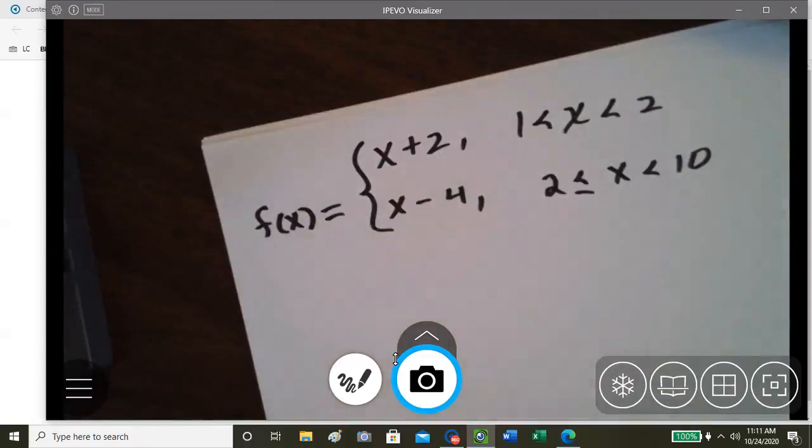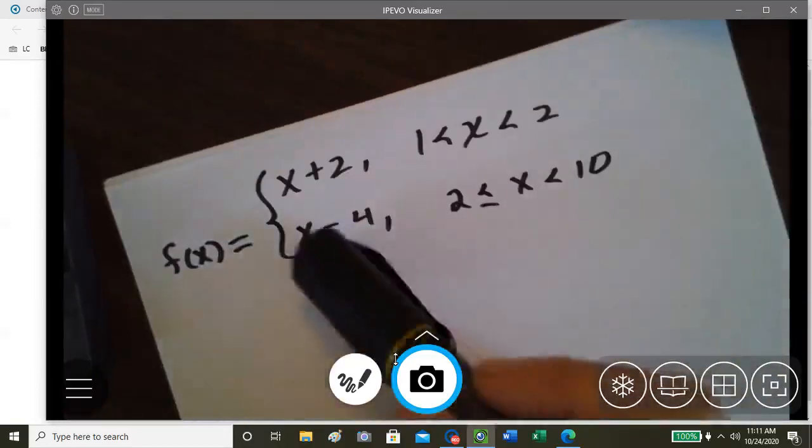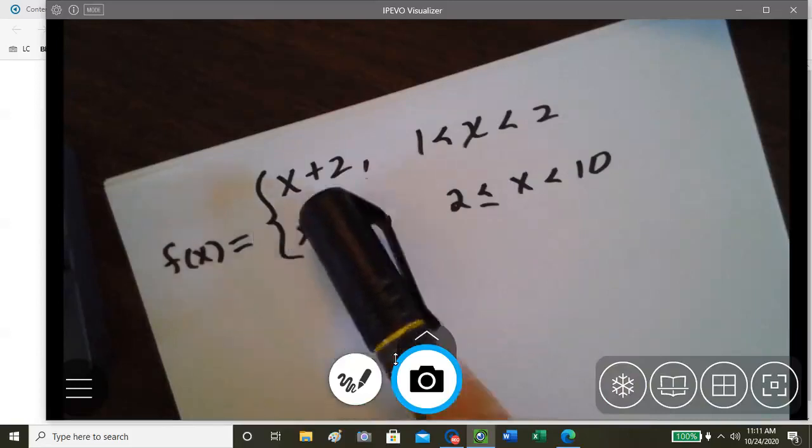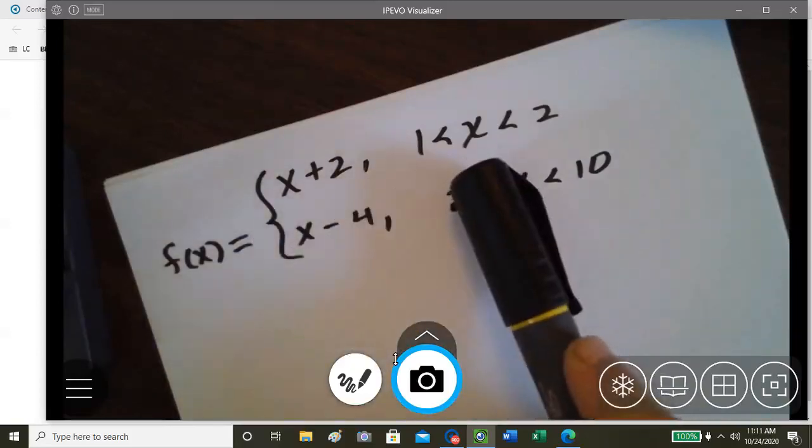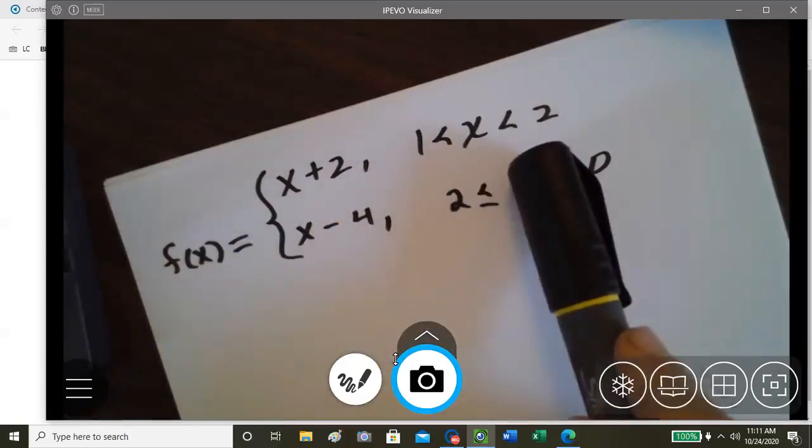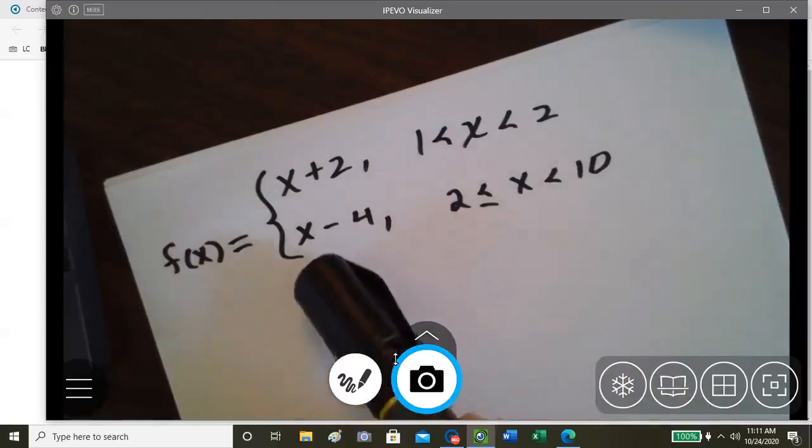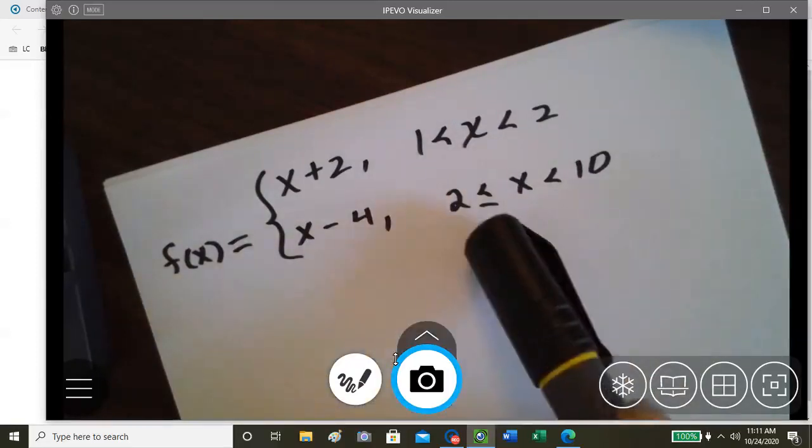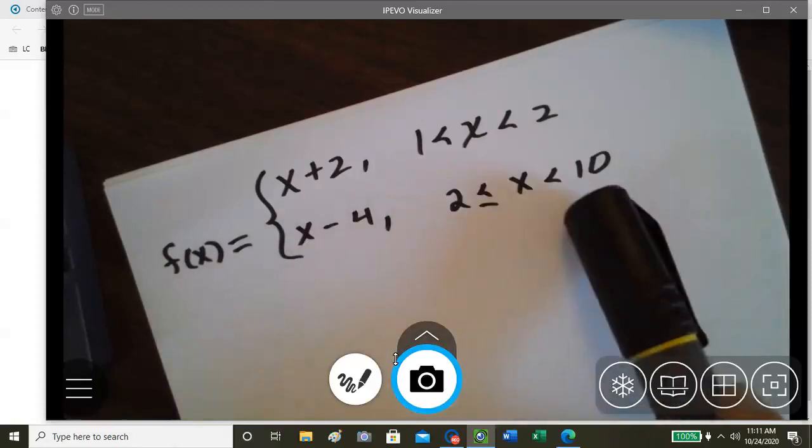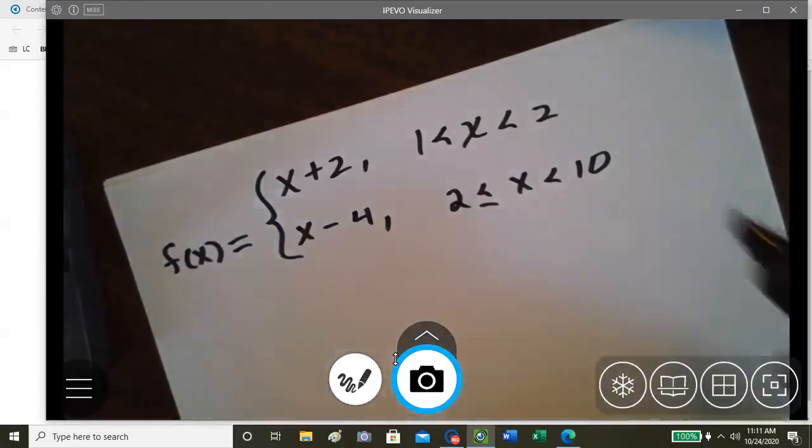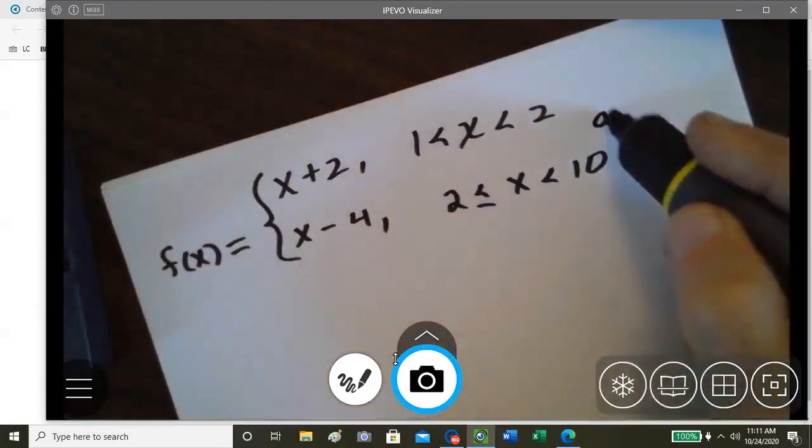So here we have a piecewise defined function: f of x equals x plus 2 when x is greater than 1 but less than 2, and f of x equals x minus 4 when x is greater than or equal to 2 but less than 10, where a equals 2.